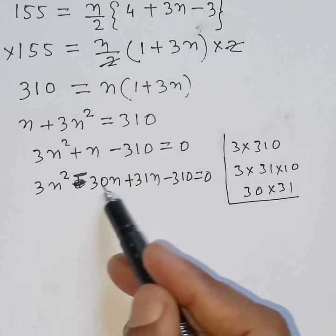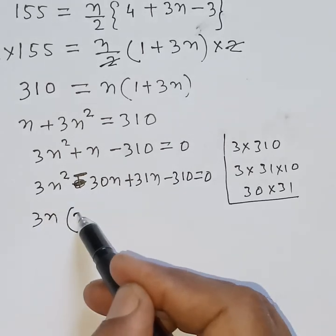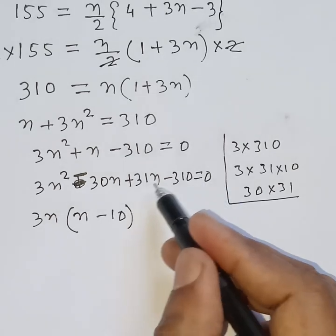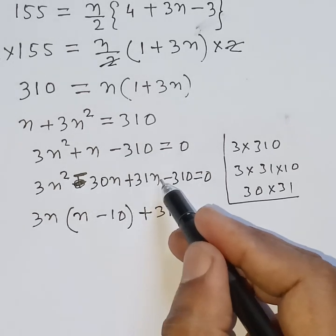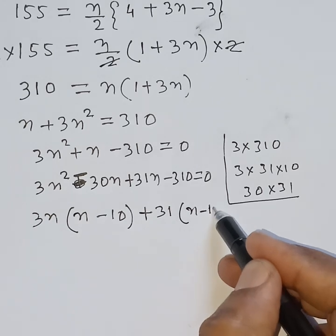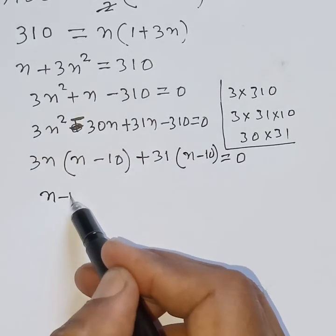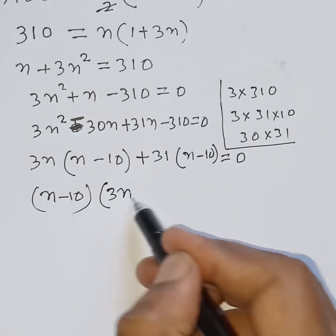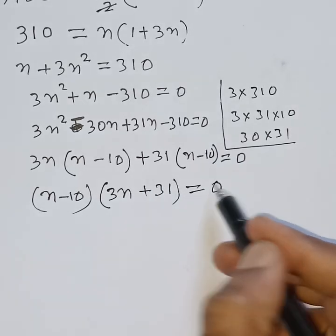From the first two terms, we take common 3n: 3n squared divided by 3n is n, and minus 30n divided by 3n is minus 10. From the last two terms, we take common 31: 31n divided by 31 is n, and minus 310 divided by 31 is minus 10. So we get 3n times n minus 10, plus 31 times n minus 10 equals 0, giving n minus 10 times 3n plus 31 equals 0.